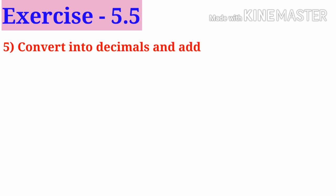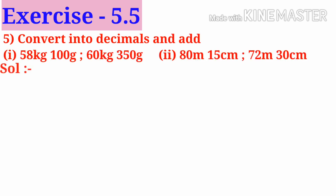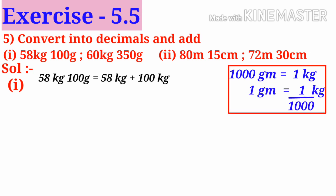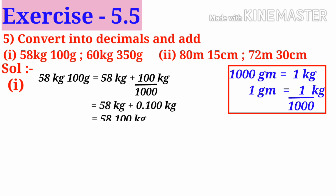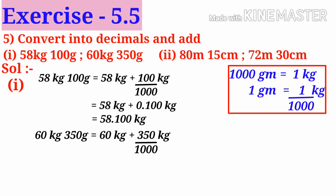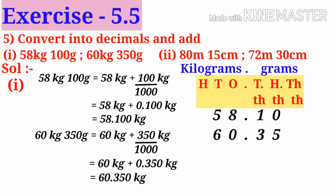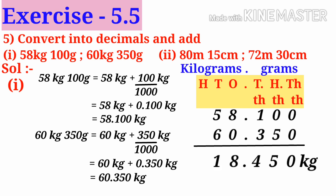Number 5: convert into decimals and add. Solution, number 1: 1000 grams makes 1 kilogram, so 1 gram is 1/1000th of a kilogram. 58 kilograms 100 grams equals 58 + 0.100 = 58.100 kilograms. 68 kilograms 350 grams equals 60 + 0.350 = 60.350 kilograms. Place in exact values and add: 58.100 plus 60.350 equals 118.450 kilograms.